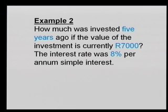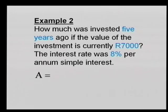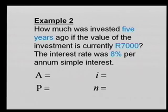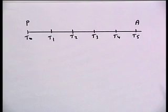Let's look at another example — example two. How much was invested five years ago if the value of the investment is currently seven thousand Rand, and the interest rate was eight percent per annum simple interest? Always write down A, P, I, and N. I want to draw a little timeline on paper to show you something. What we know is the money we have now is currently seven thousand Rand, and we want to know what the investment was worth back in time.